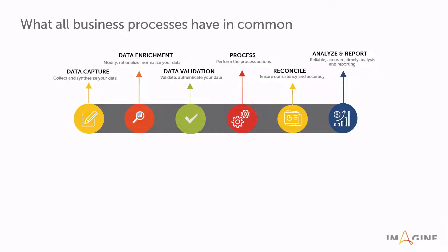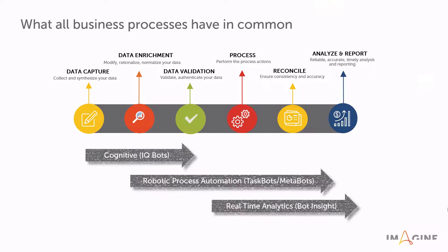This is what every business process has in common: data capture, enrichment, validation, processing, doing the actual work, reconciling to ensure good audit and accuracy, and then analyzing and reporting. Our cognitive solution, IQBot, helps with data capture and data enrichment. All those things can occur prior to the robotic process automation, with a smooth handoff between the two. This is the real benefit of using our cognitive solution in accordance with our RPA solution.